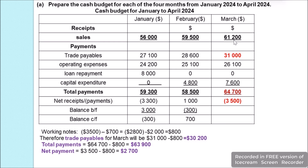In March, sales are $61,200, which are the total receipts. Total payments include trade payables of $31,000, operating expenses of $26,100, and capital expenditure of $7,600, giving total payments of $64,700. Subtracting $64,700 from $61,200, net payments due are $3,500. With the opening balance of $700, this results in a bank overdraft of $2,800, which exceeds our policy limit of $2,000.